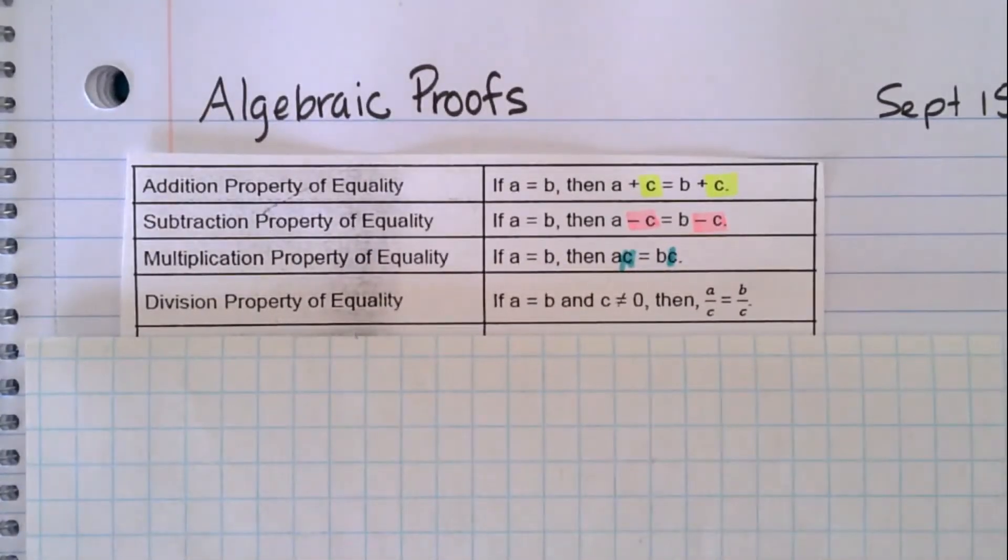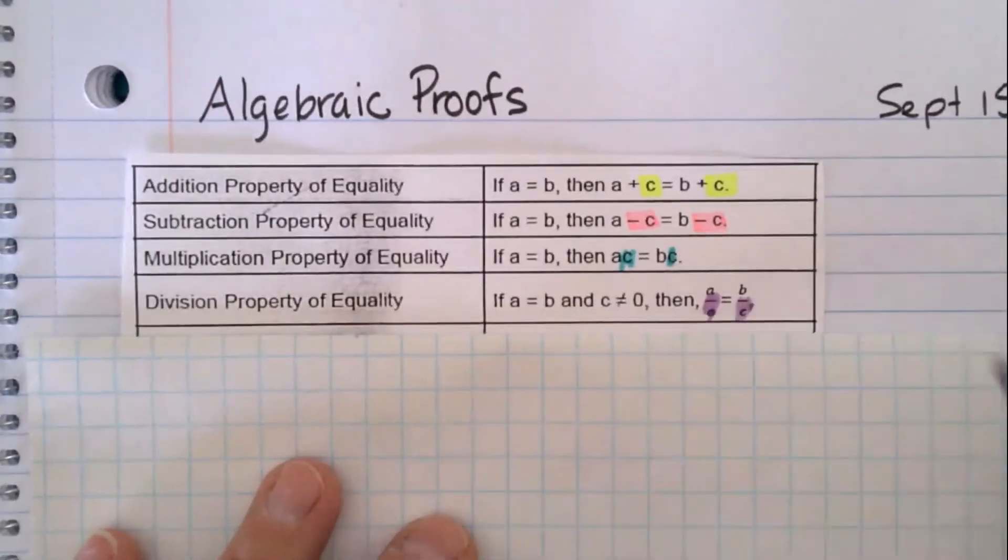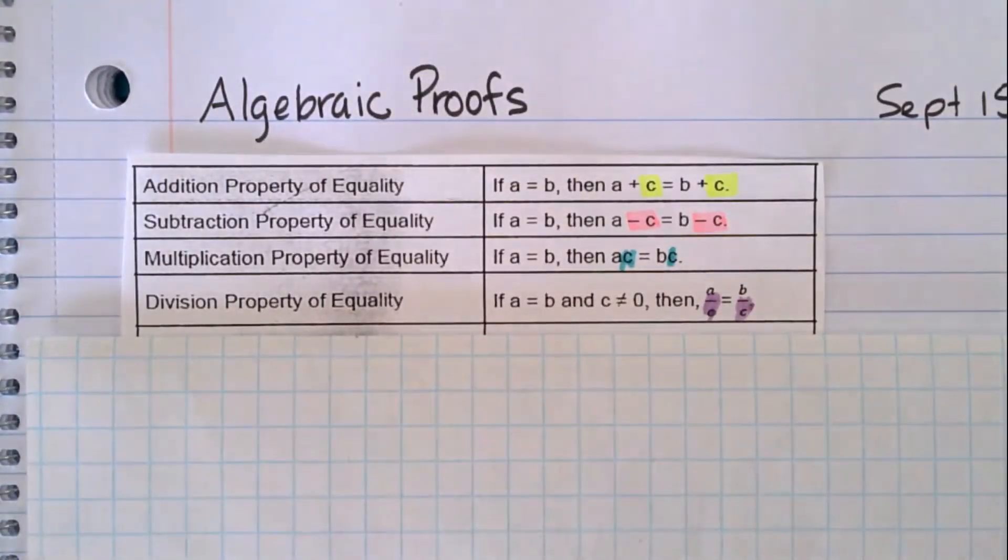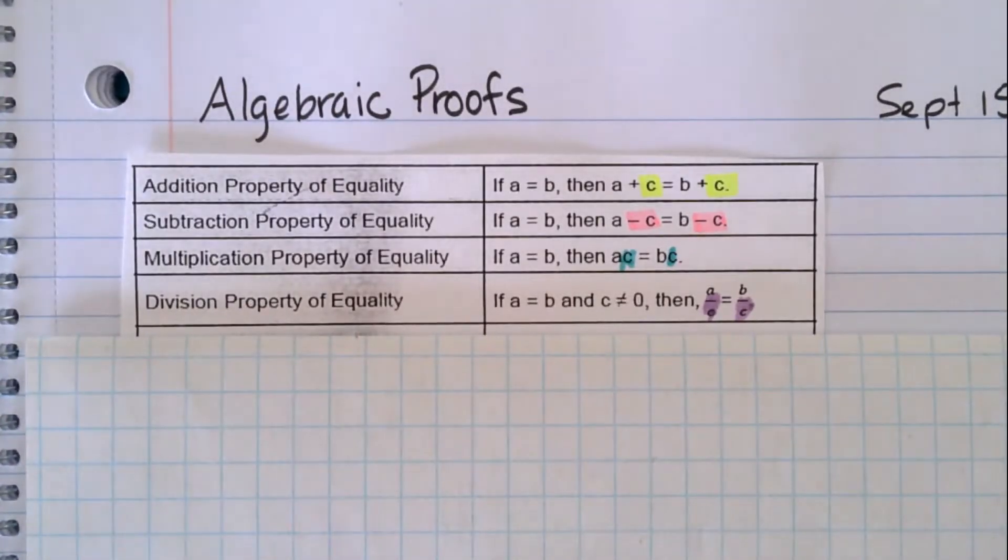The division property of equality: if you have two things that are equal and you divide by the same number, that's not zero because you can't divide by zero, then you're still going to end up with something that's equal.